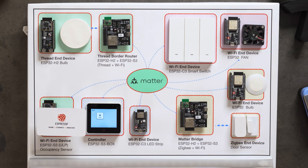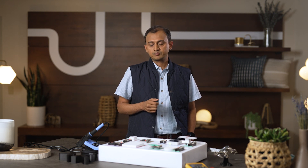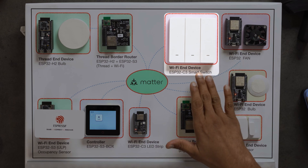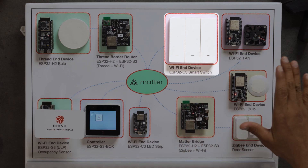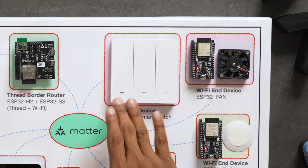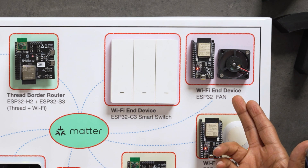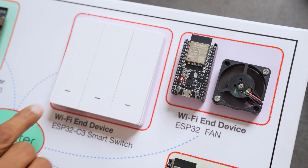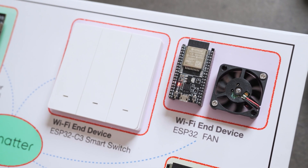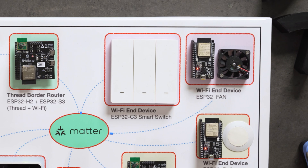Let's get on with the demo. First we'll talk about Wi-Fi based end devices. Here you see a Wi-Fi switch that is going to control this fan, which is also a Wi-Fi fan. When I switch on this device, as you can see, the fan has turned on, and then I press it back again and the fan has turned off. As you might notice, this communication has happened over Matter Wi-Fi.